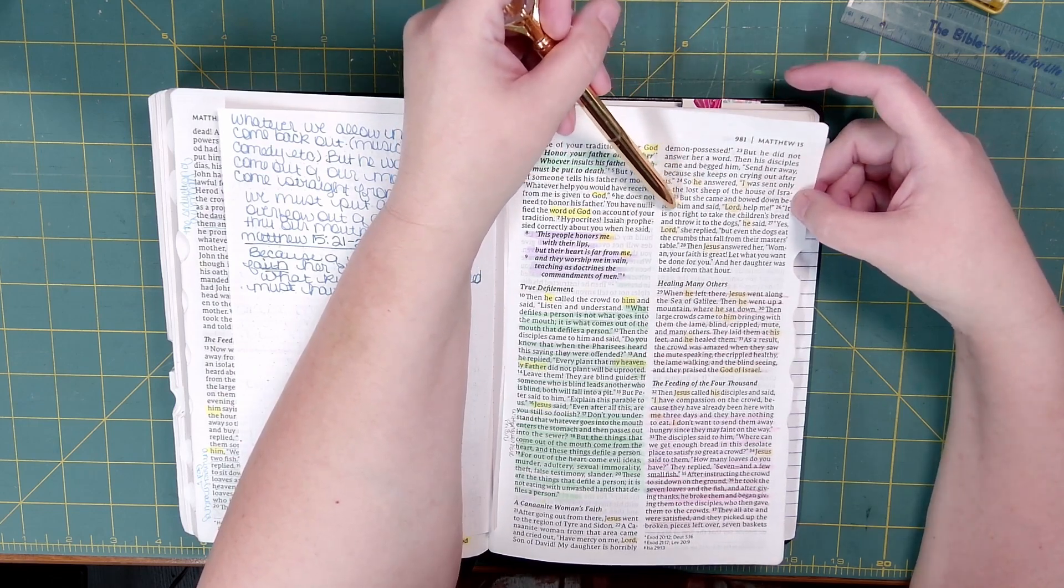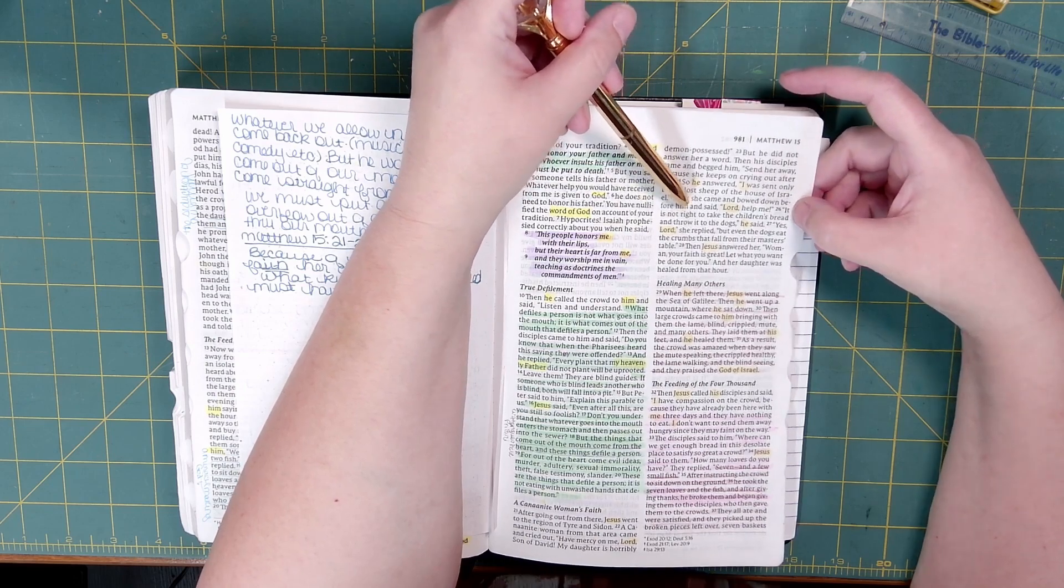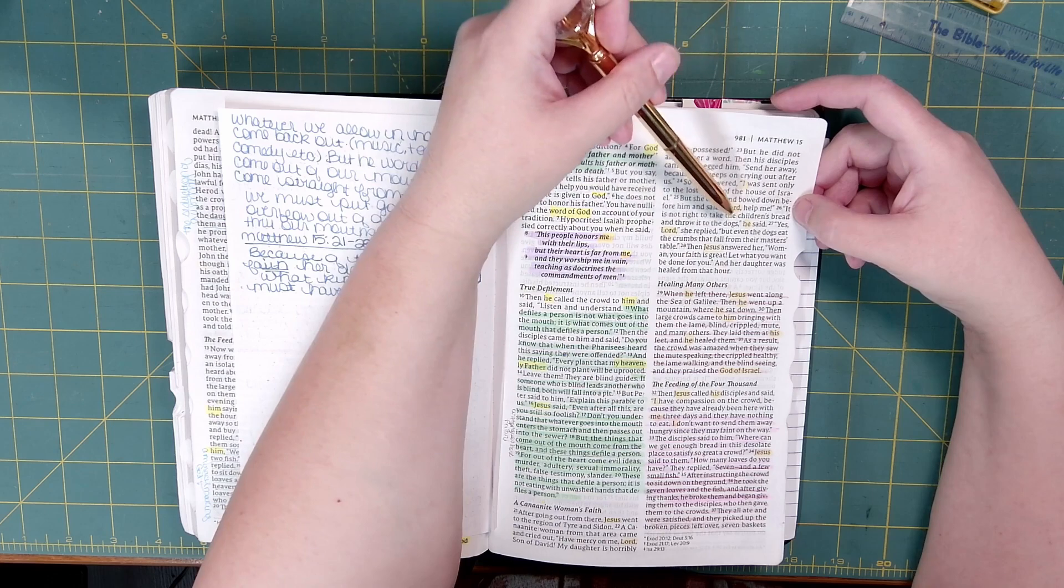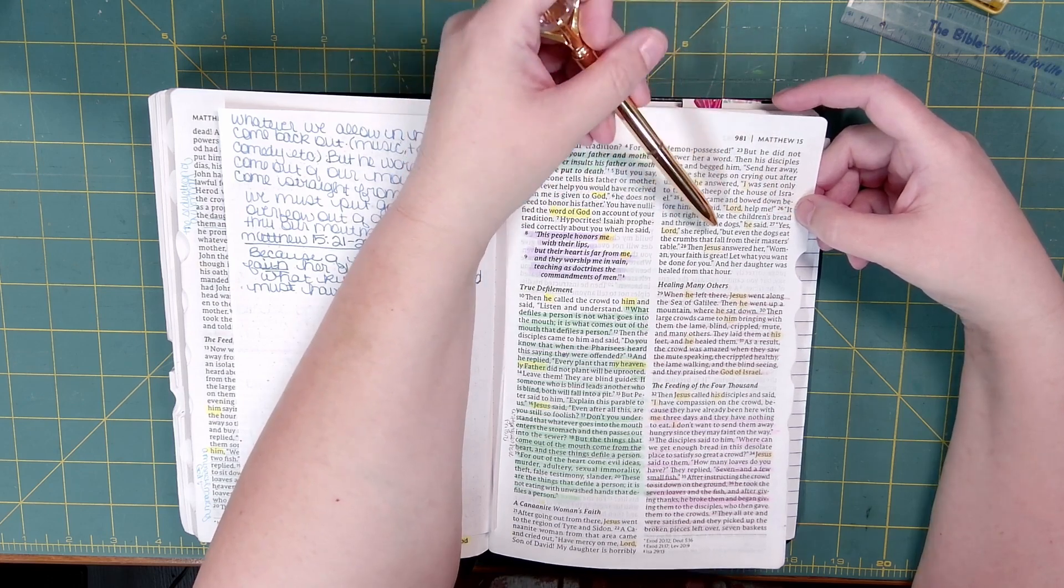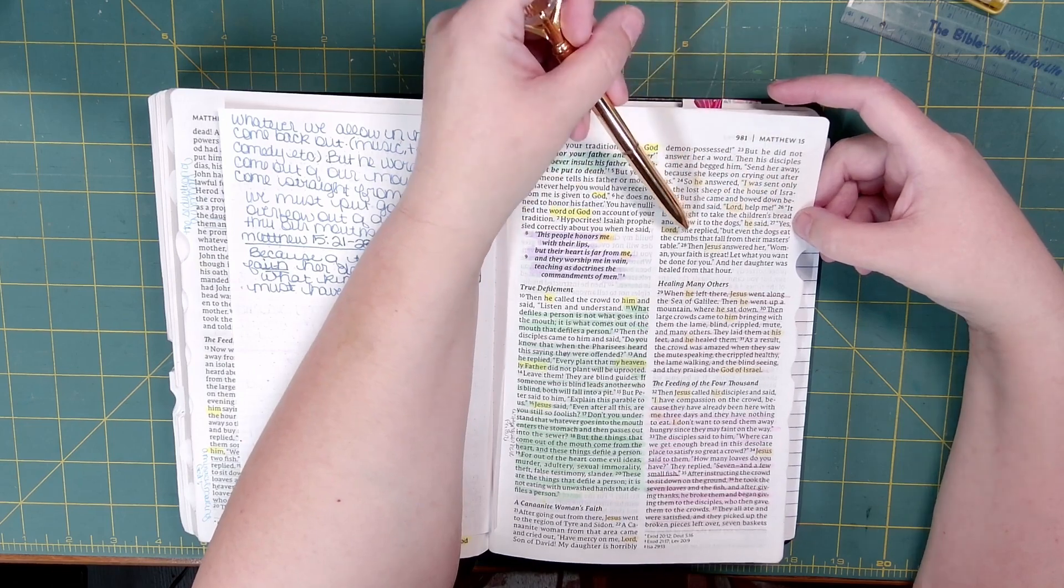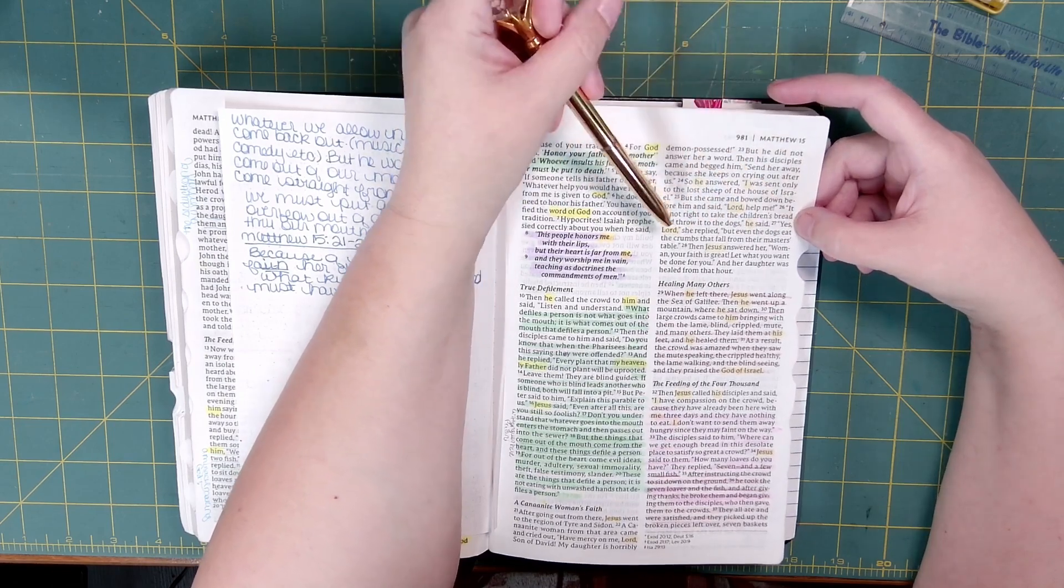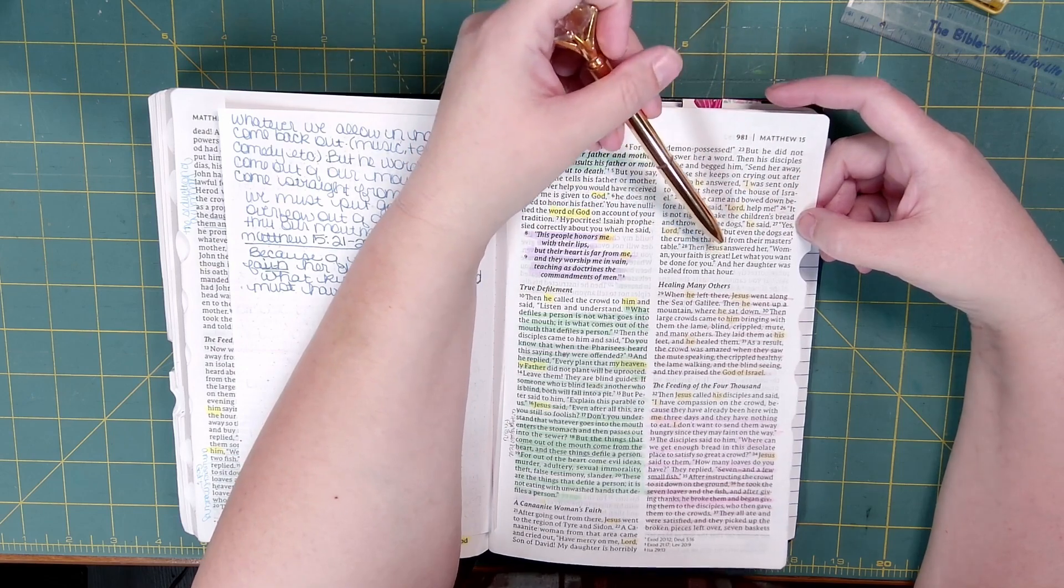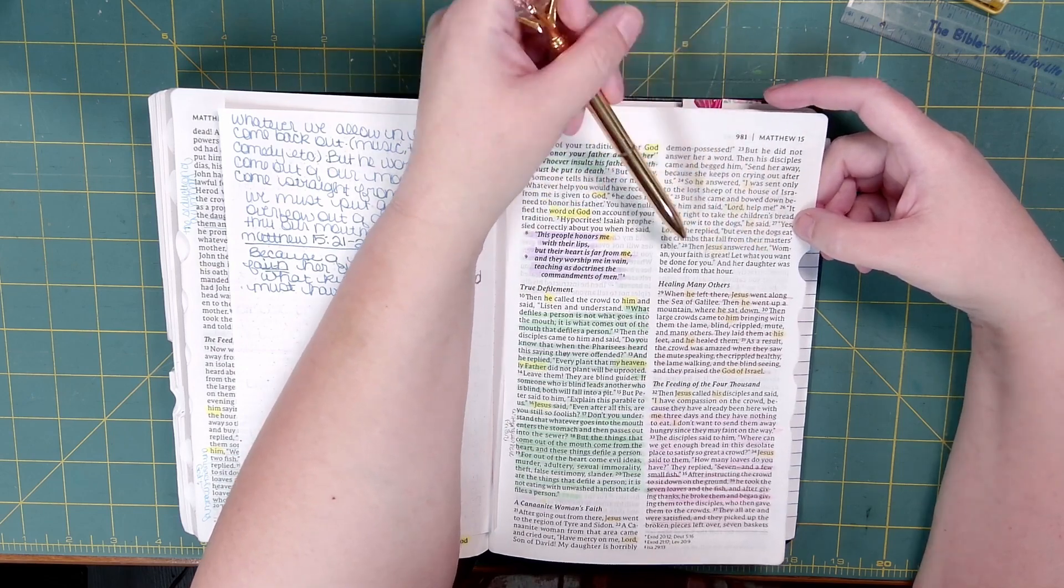But she came and bowed down before him and said, Lord, help me. It is not right to take the children's bread and throw it to the dogs, he said. Yes, Lord, she replied, but even the dogs eat the crumbs that fall from their master's table.